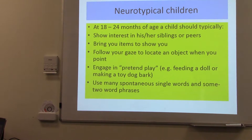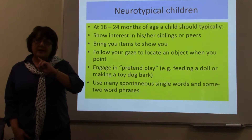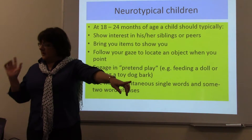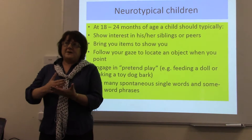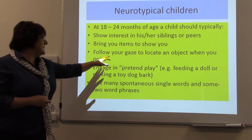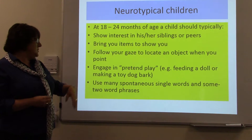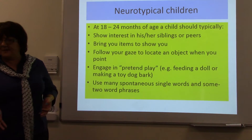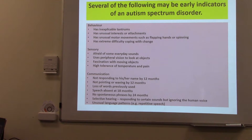Instead of saying children that develop normally, we talk about neurotypical children. Typically at 18 to 24 months they should show interest in their siblings or peers, bring you items to show you, follow your gaze to locate an object you're pointing at. That's called theory of mind. They will engage in pretend play and use many spontaneous single words and some two-word phrases. That would be a neurotypical child. Several of the following may be early indicators of ASD.